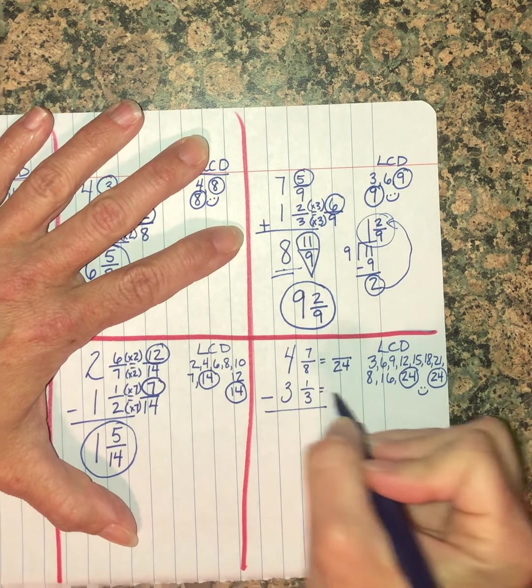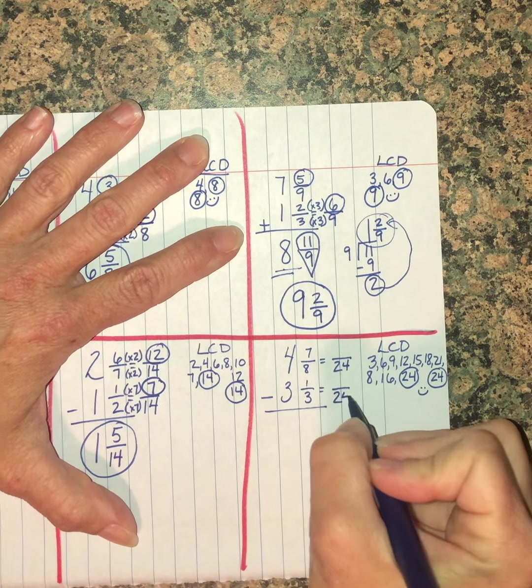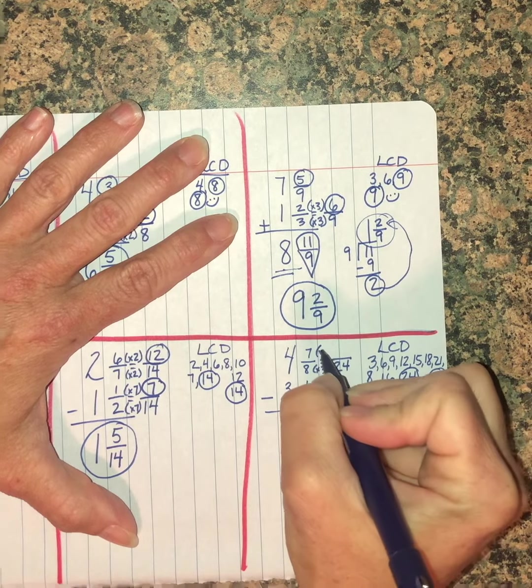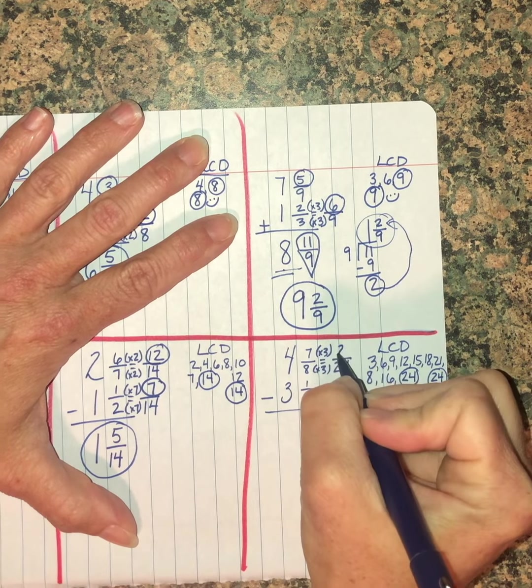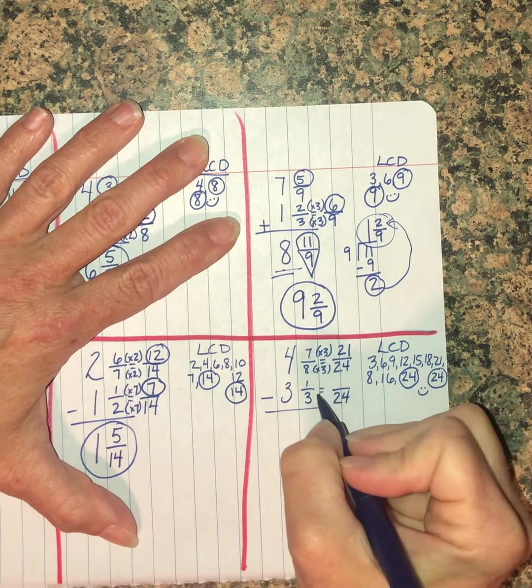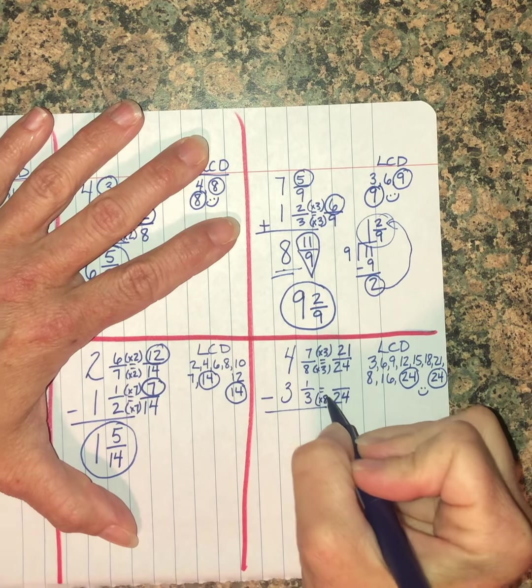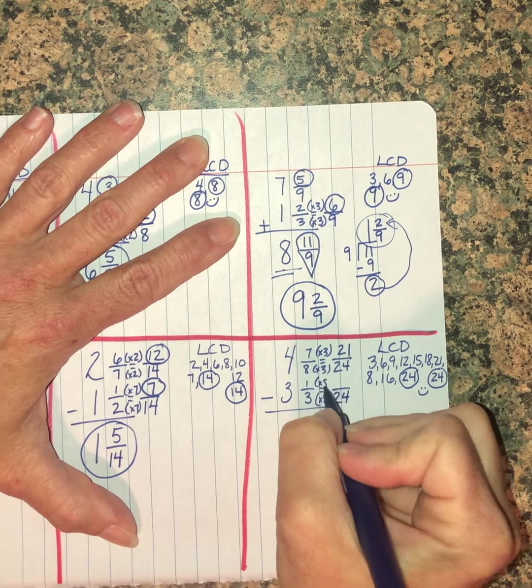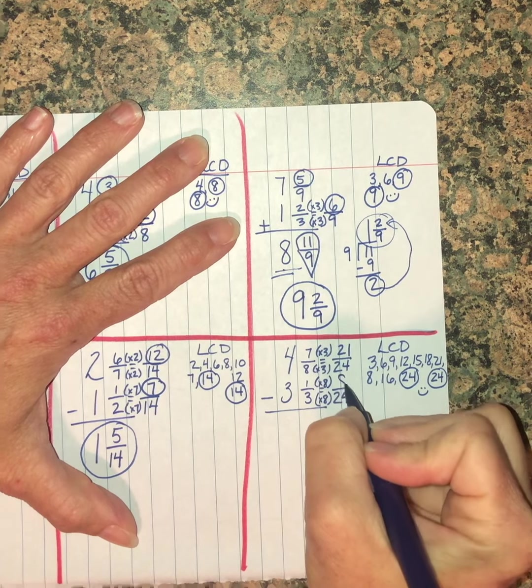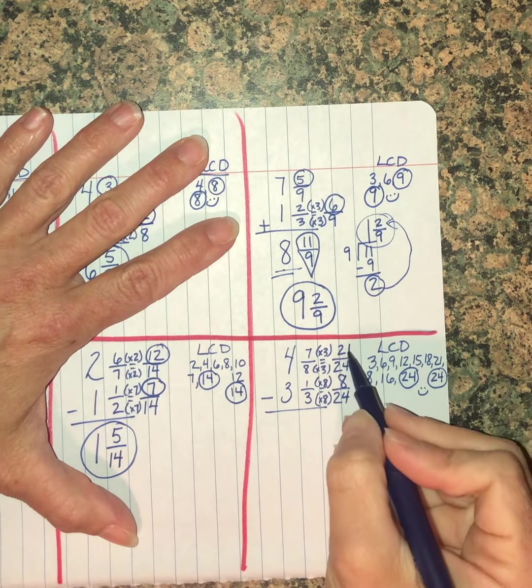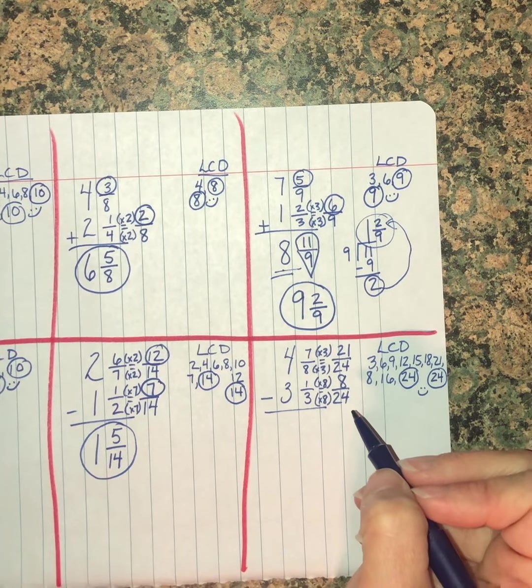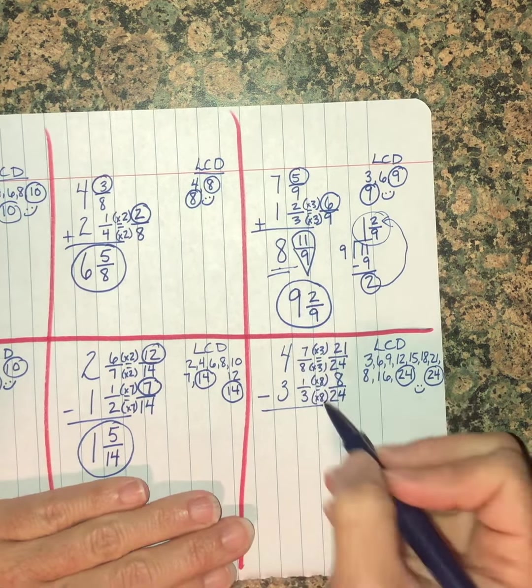So I'm going to turn these into twenty-fourths. Eight times three is twenty-four, seven times three is twenty-one. Three times eight is twenty-four, one times eight is eight.